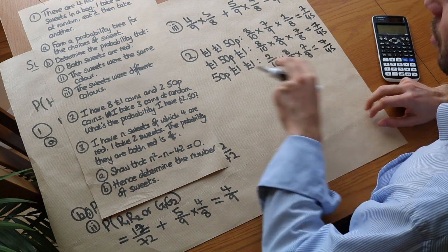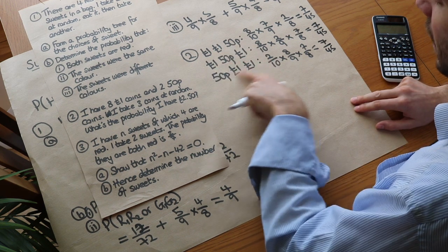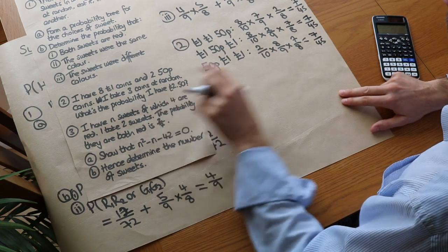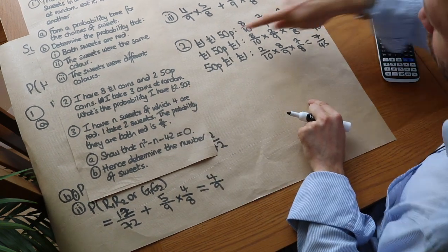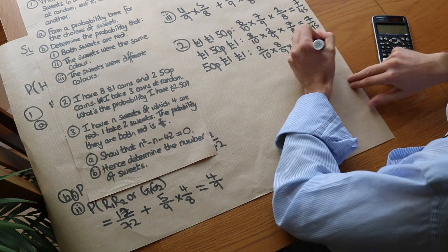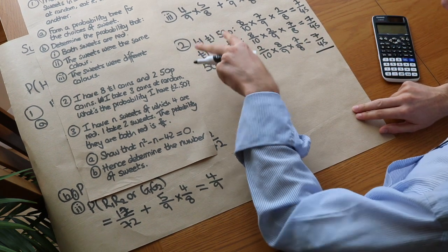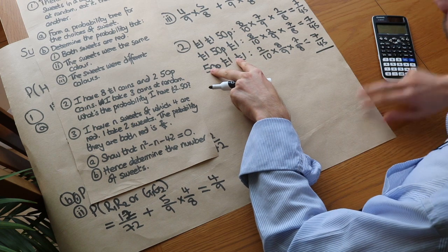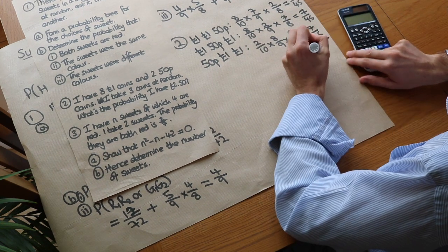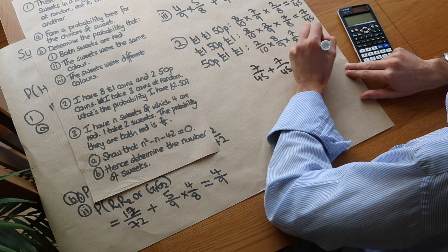This is a general truth: if you have the same outcomes in a different order, you get the same probability. So you can calculate just the first possibility and multiply by three — the number of orderings. Since it's one possibility OR another OR another, we add: 3 times 7 over 45 gives a grand total of 7 over 15.